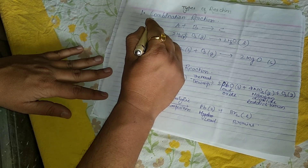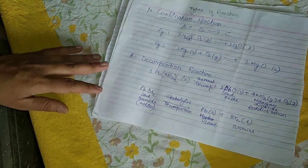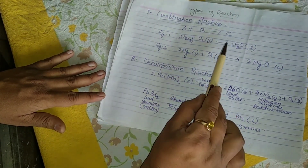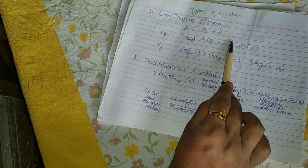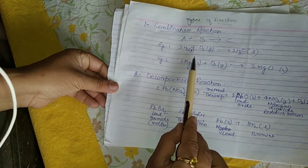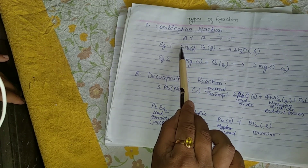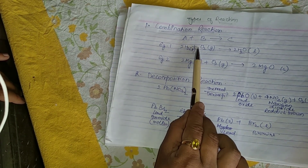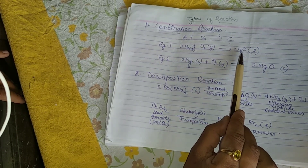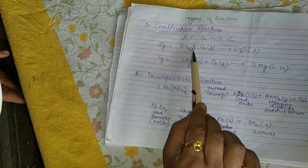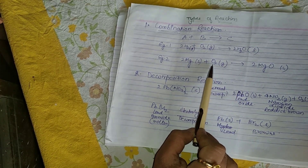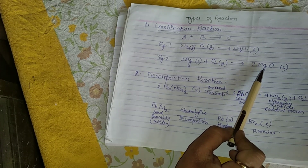The first type is the combination reaction. As the name suggests, there is a combination of two elements — element A combines with element B and forms element C. Two elements combine to form a third compound. For example, two moles of hydrogen react with one mole of oxygen to give two moles of water (liquid). In another example, two moles of magnesium react with one mole of oxygen to form two moles of magnesium oxide.